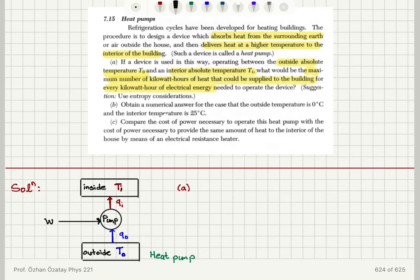I have a drawing of this heat pump here. We are extracting heat from outside, providing heat to inside, and there is electrical energy provided to the pump. If I write the entropy change of the outside, it is minus Q out over T out, and the entropy change of the inside is plus Q in over T in.